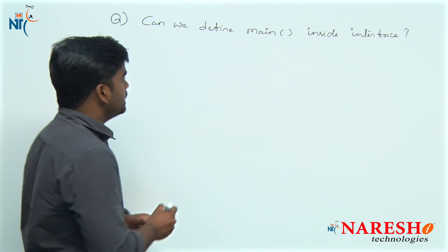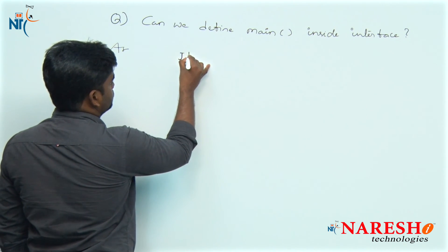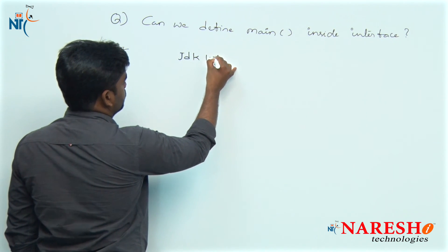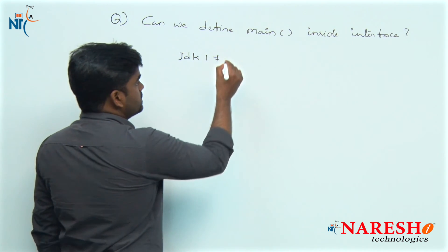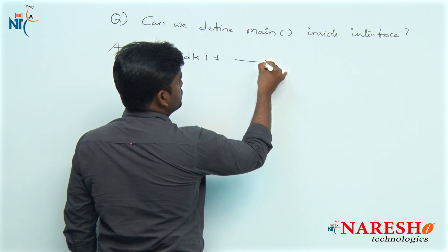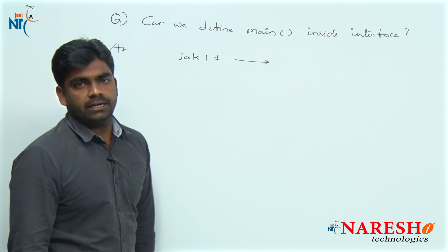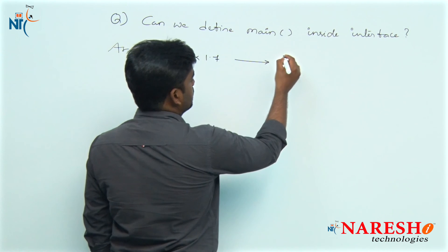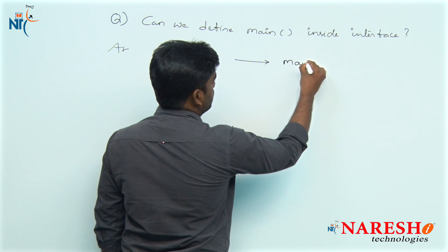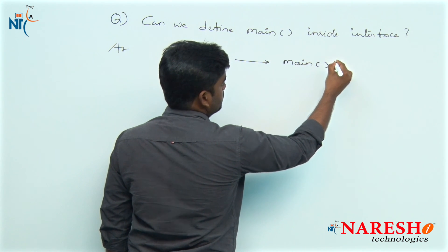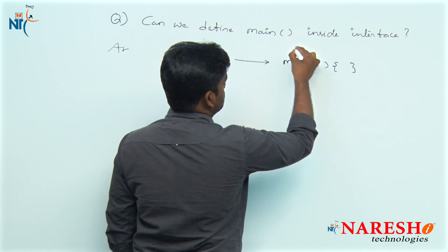Up to JDK 1.7, any method definition is not allowed inside the interface. If you try to define main method inside the interface, that is not allowed.